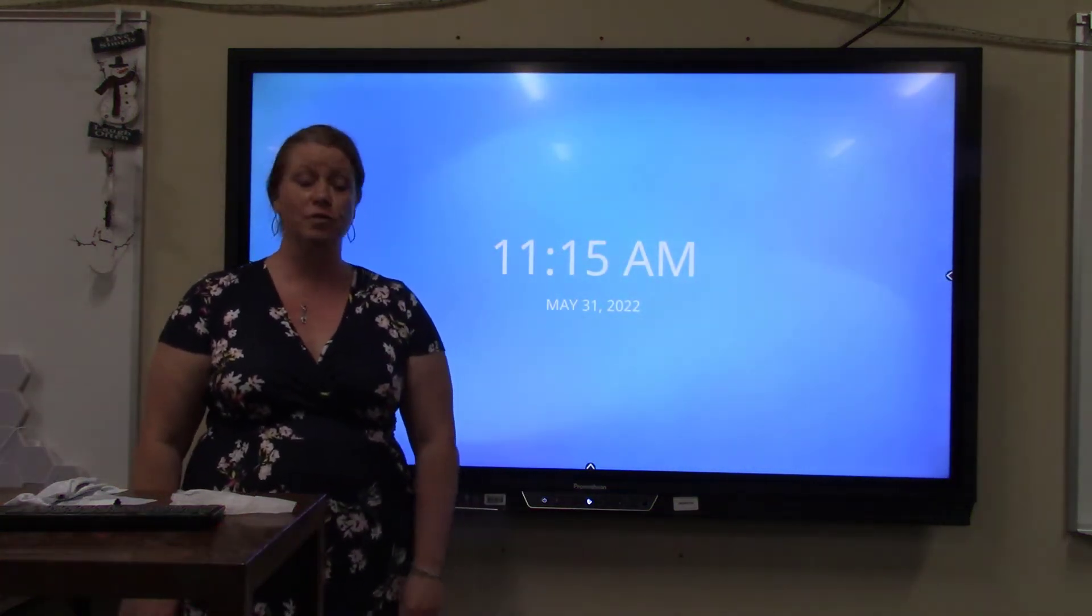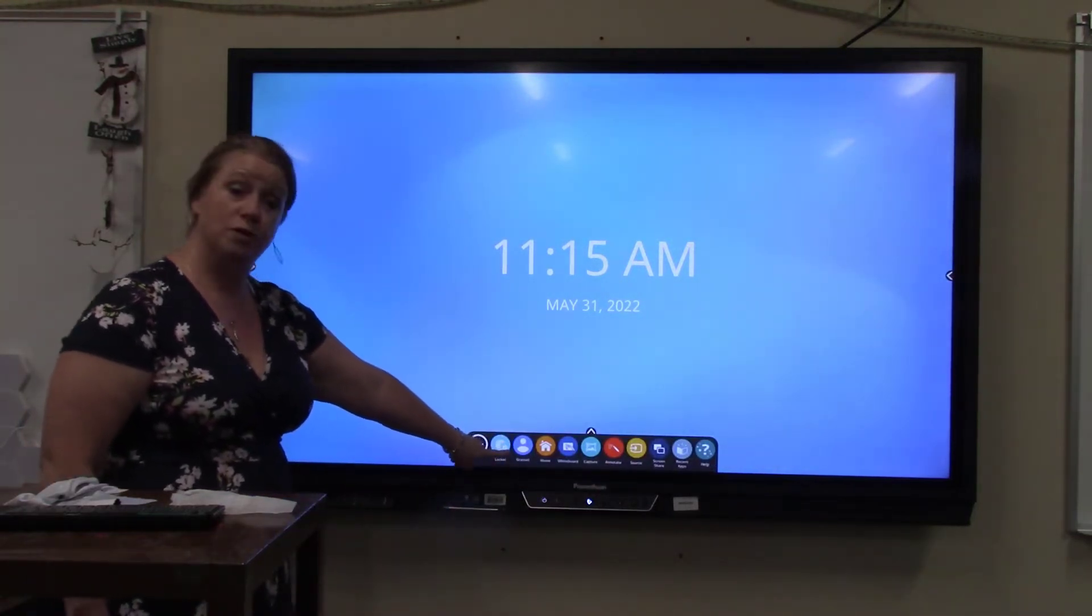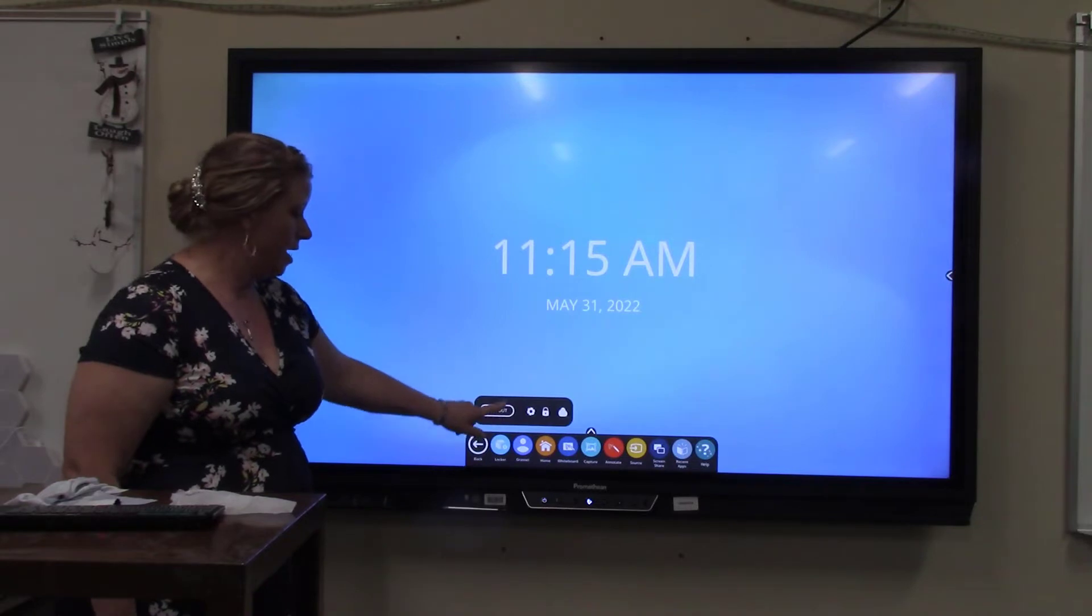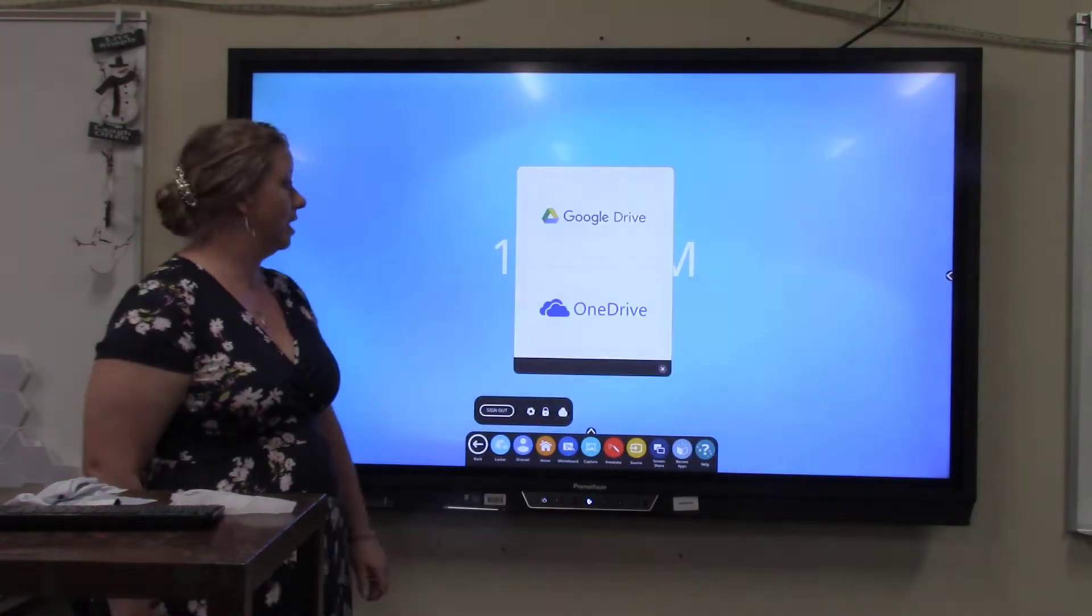I'm going to go to my unified menu. On my unified menu, I'm going to go under my profile, which says Grasso. Tap that, and then you're going to see that there is a cloud icon. I'm going to tap that cloud icon.